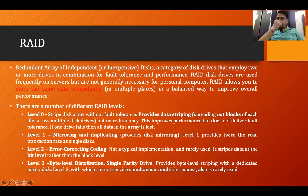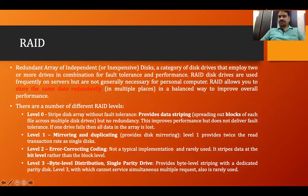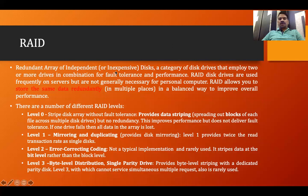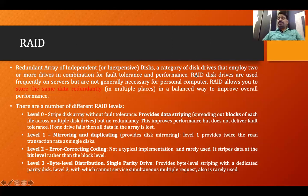Redundant means duplicate — we should have the same data available across different disks so that reliability can be maintained. That is the objective of the Redundant Array of Independent Disks (RAID). RAID is a category of disk drives that employ two or more drives in combination for fault tolerance and performance. If any fault occurs, it can tolerate those faults, and performance is also increased.